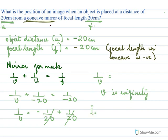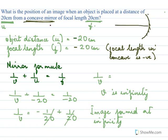The image is formed at infinity because when the object is placed at the focus of a concave mirror, the reflected rays are parallel and the image forms at infinity. This is a standard result for concave mirrors.